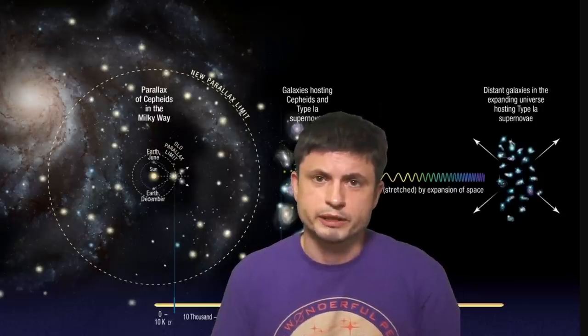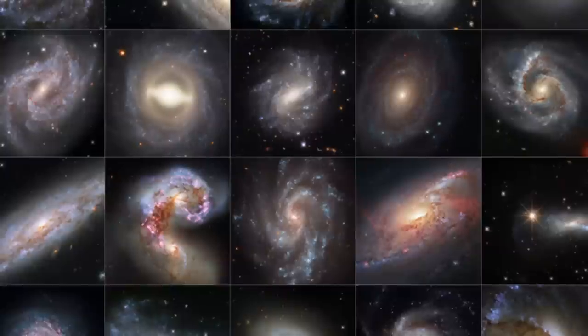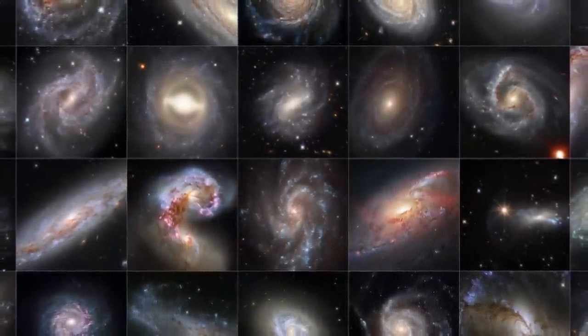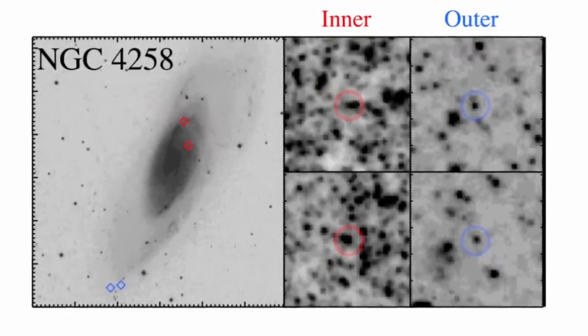Nobody really knows what's happening — even the KBC void explanation might not explain everything, since many of these galaxies are in very different regions of space and not all may be affected by the void. This is not a satisfying conclusion, but it's where the most up-to-date data has led us. That means we have no reliable idea how old the universe truly is, how far certain objects are, or whether modern cosmological theories are even correct. Future telescopes like the James Webb Space Telescope may help by seeing even further than Hubble.